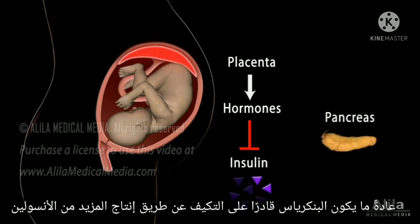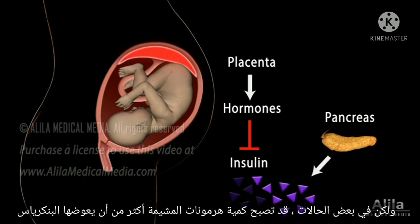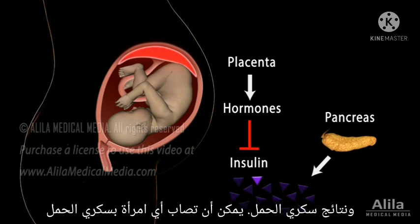Usually, the pancreas is able to adjust by producing more insulin. But in some cases, the amount of placental hormones may become too overwhelming for the pancreas to compensate, and gestational diabetes results.